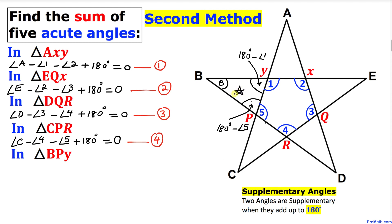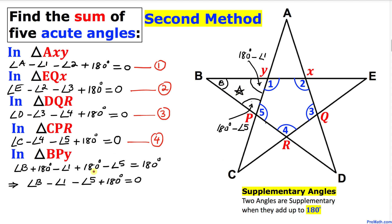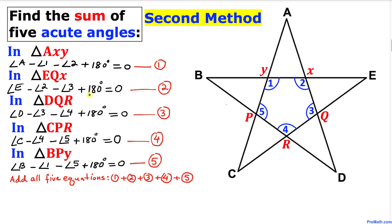And finally, let's focus on triangle BPY. We repeat the same process. The 180-degree terms cancel and we end up with this simplified equation. Let me call this equation number five.